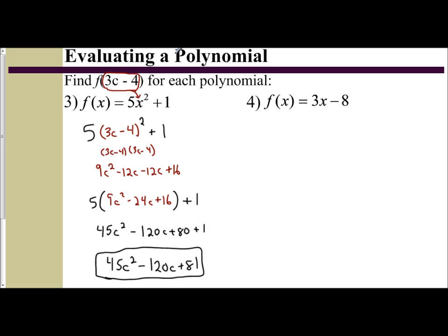It's the same idea for number 4. F(x) equals 3x minus 8. Find F(3c - 4). We want to take the 3c - 4 and plug it in for our x.